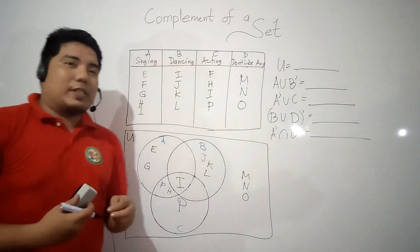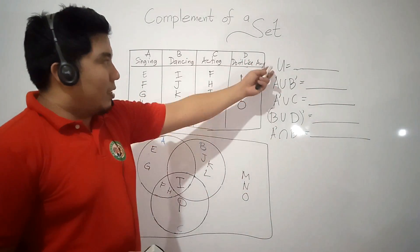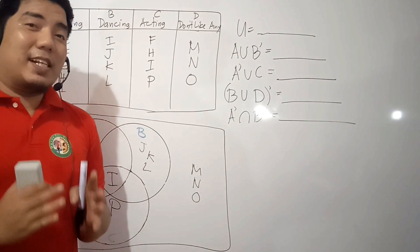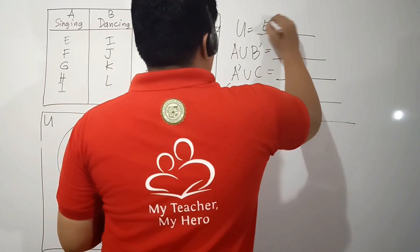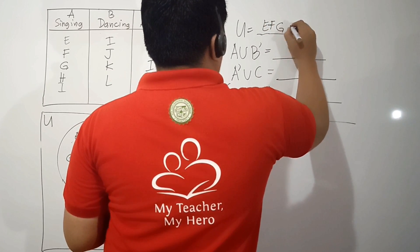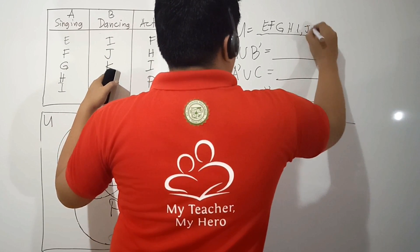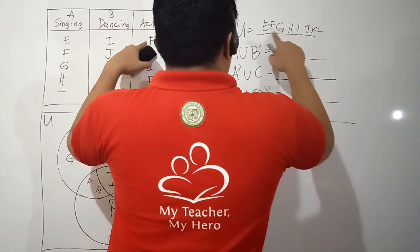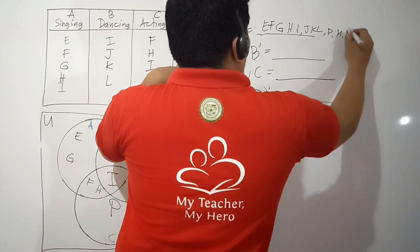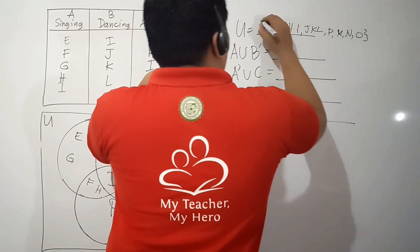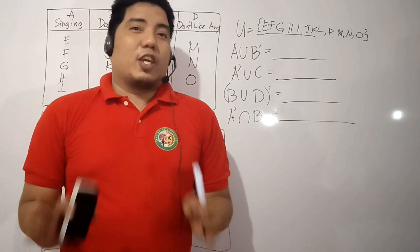This is how we represent our members in the Venn diagram. Now let us answer the Venn diagram problems. What is the universal set? The universal set has the elements of all the sets, so we write all the letters: E, F, G, H, I, J, K, L, M, N, O, and P. Remember that the arrangement of members in a set doesn't affect your answer.